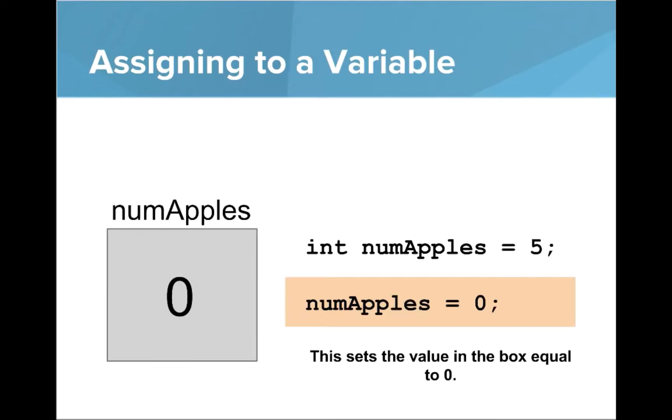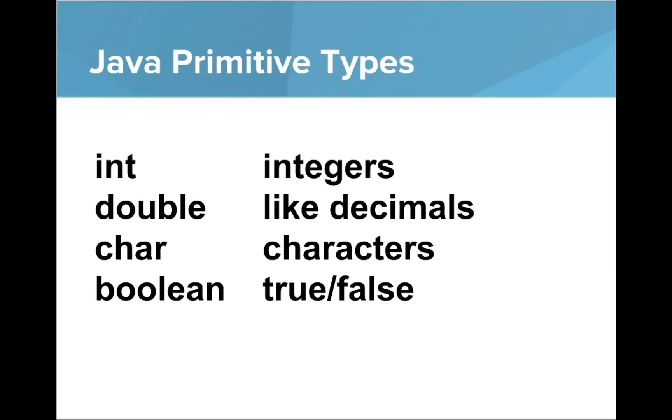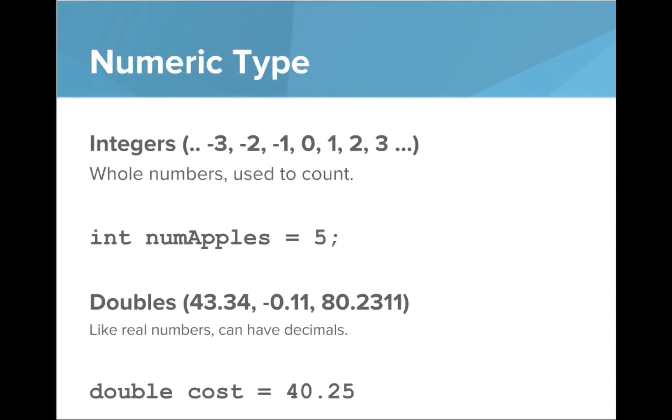There's a few types in Java that you'll want to be aware of. Some of them are the primitive types. We've already used int which is for integers, double is for numbers that have decimals, char is for characters like a, b, c, d, and boolean is for true/false values. For the number types, the integers are whole numbers, the numbers used to count, like negative 3, negative 2, negative 1. Here's an example of using integer: int numApples equals 5.